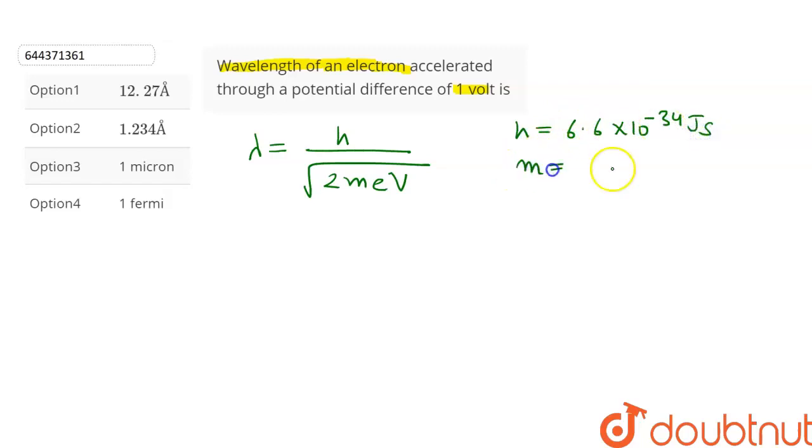The mass of electron is equal to 9.1 into 10 raised to the power minus 31 kg. e is equal to 1.6 into 10 raised to the power minus 19 coulomb, and it is given that v is equal to 1 volt.